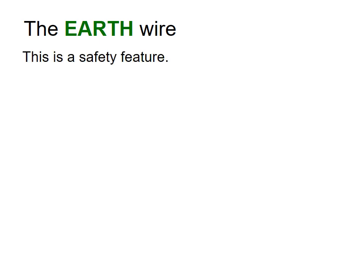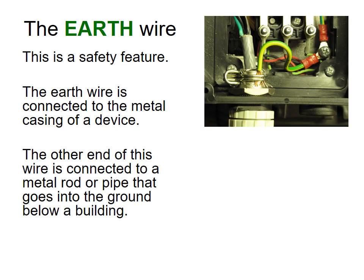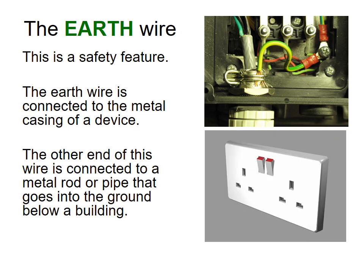The earth wire is designed as a safety feature. It is connected to the metal casing of the device, and the other end is connected to a metal rod or pipe that goes into the ground of the building. This means that if there is a fault, the electricity goes straight down to earth rather than into your hands.